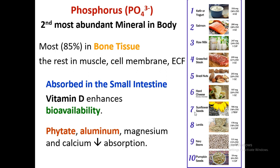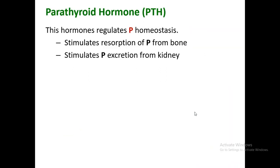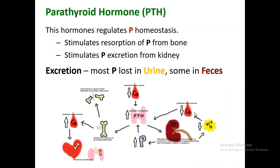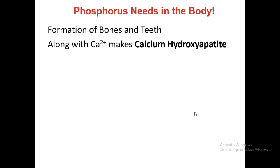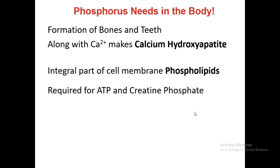Phosphorus is absorbed in the small intestines. Vitamin D enhances its bioavailability, while phytate, aluminum, magnesium, and calcium decrease absorption. Parathyroid hormone also affects phosphorus. Phosphate is a moiety in the lipids of the cell membrane — those lipids are called phospholipids. Phosphate is also part of ATP, the energy currency of the cell. Phosphorus is present in DNA, RNA, and ATP, which is why it is sometimes referred to as the 'God mineral.'